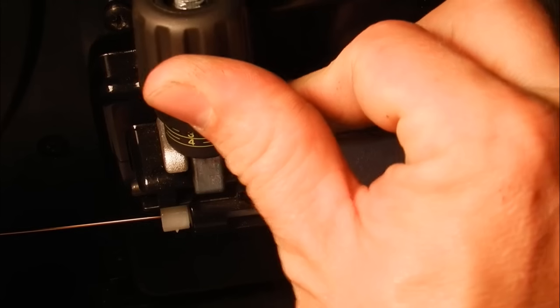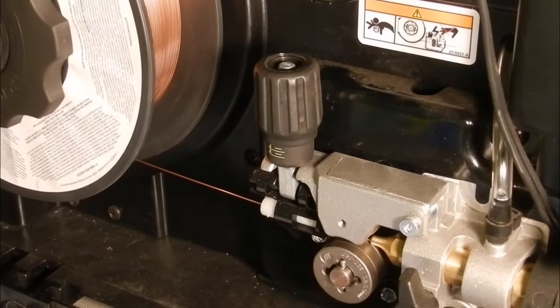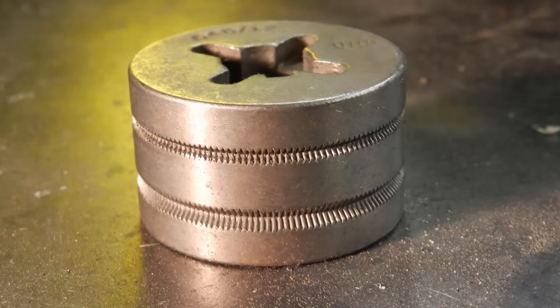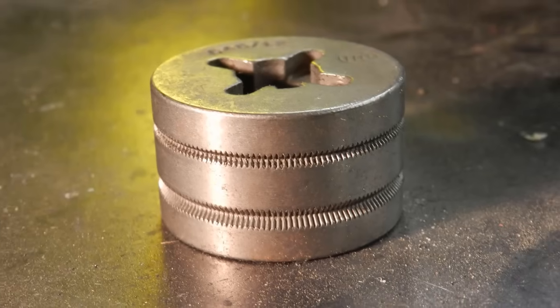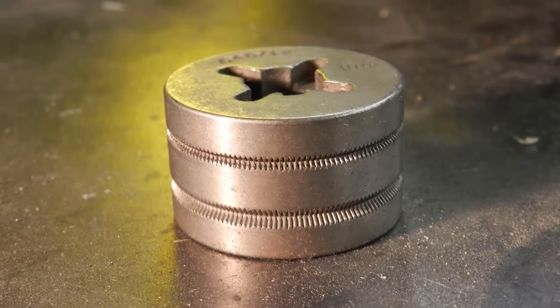In flux core welding, the wire electrode is fed through a wire feed unit. Usually this wire feeder requires knurled rollers that can grip the tubular wire without flattening or damaging it.